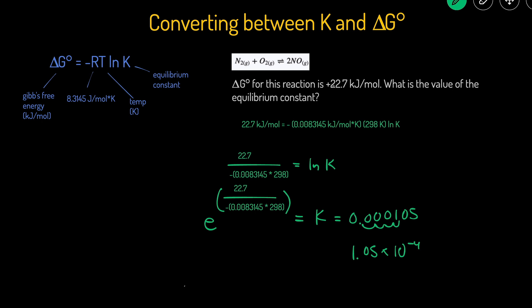Let's check if that makes sense. ΔG° is positive, meaning this reaction is not spontaneous and favors reactants. Our equilibrium constant is less than one, meaning more reactants than products at equilibrium. To convert between ΔG° and K, use the equation ΔG° = -RT ln K. The most important thing is to make sure ΔG° and R are in the same units.